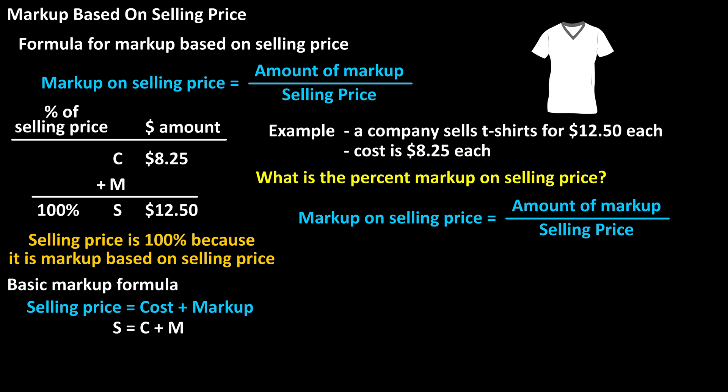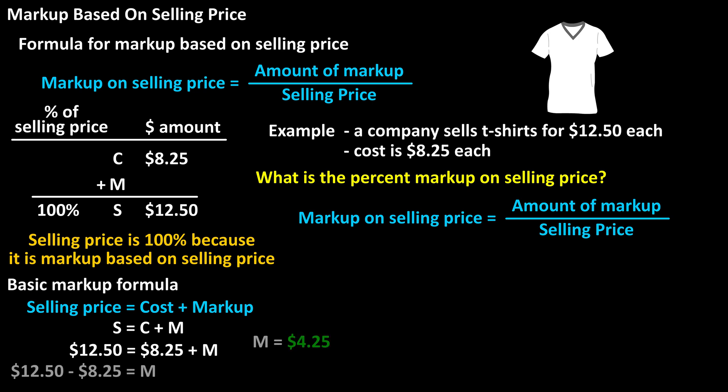From what we know, we have $12.50 (the selling price) equals $8.25 (the cost) plus the markup. From this, we get markup equals $4.25, and we can put that value in the table.